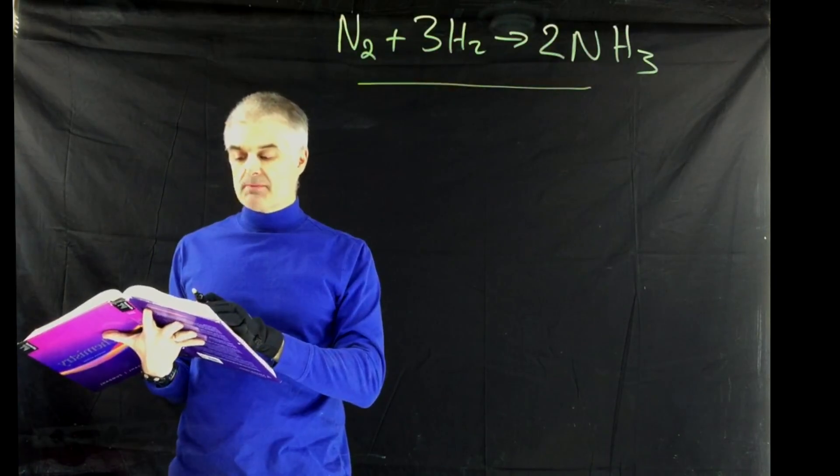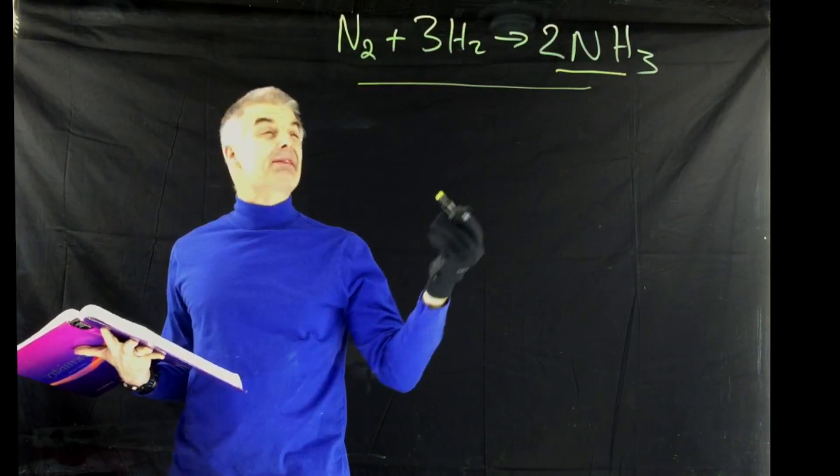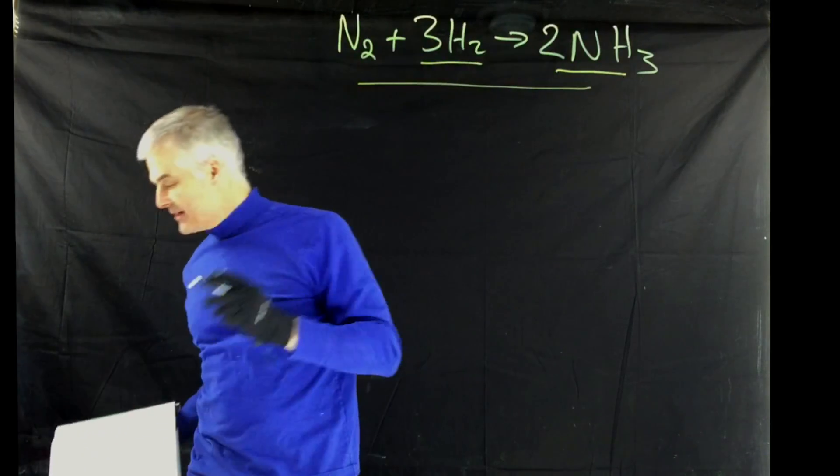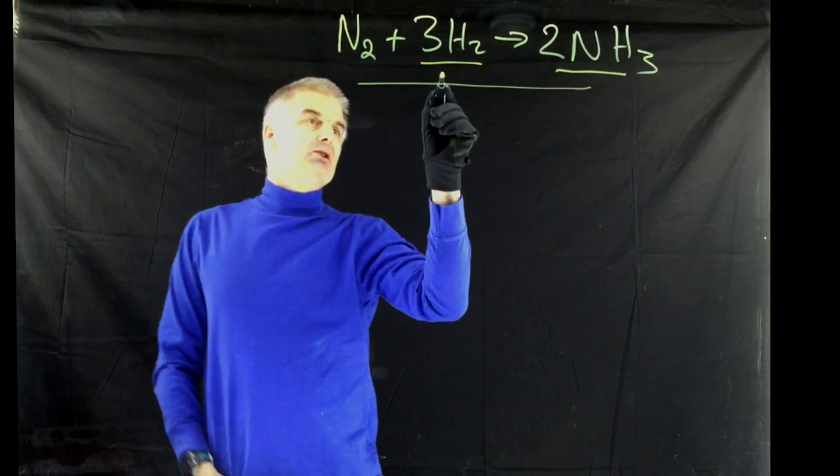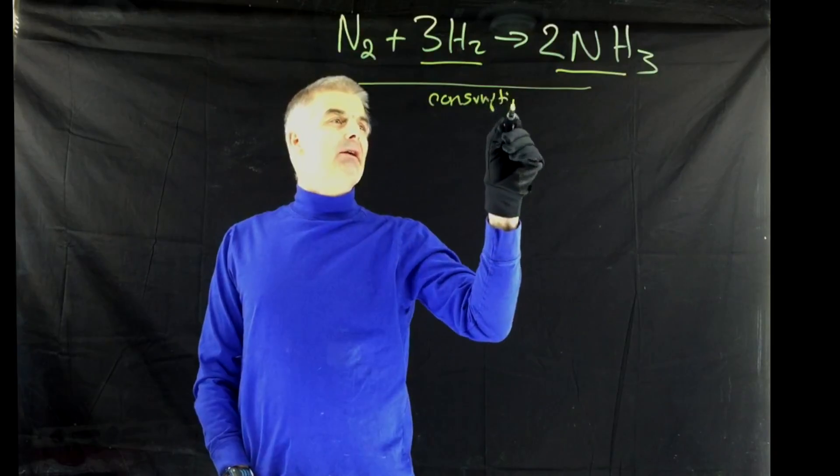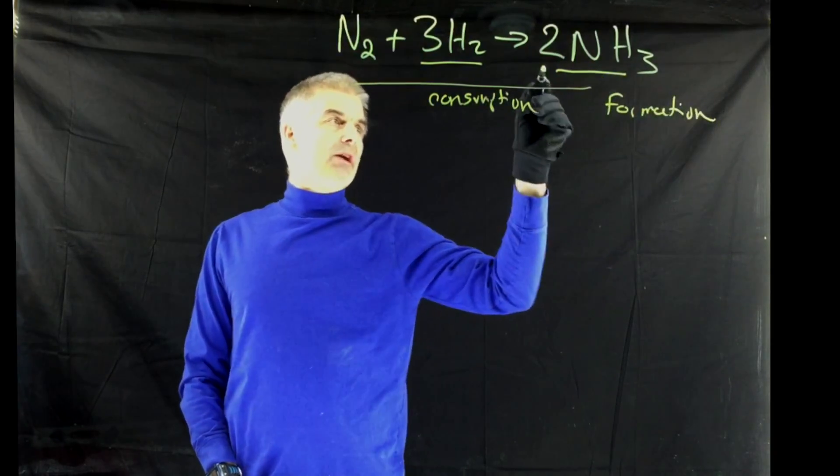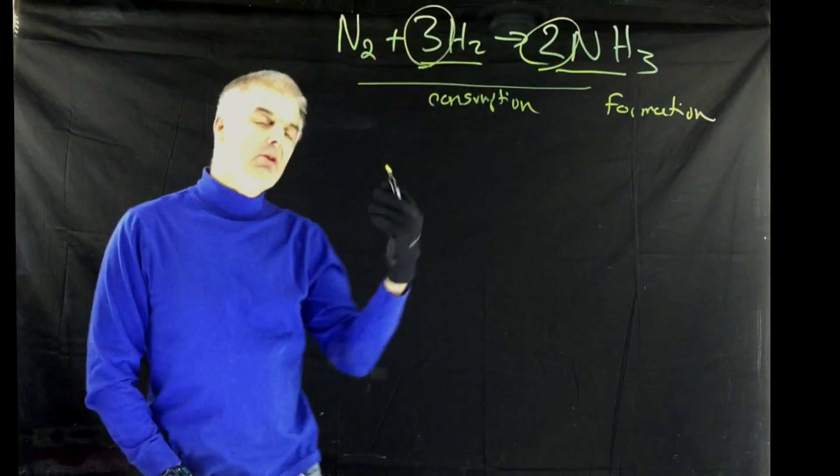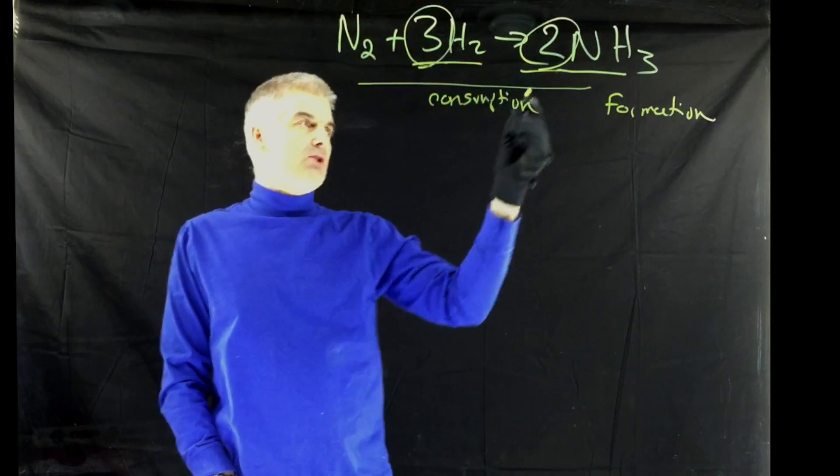what is the relationship between the rate of production of ammonia and the rate of consumption of hydrogen? The key to this whole thing is these stoichiometric ratios, or sometimes called the mole to mole ratios.